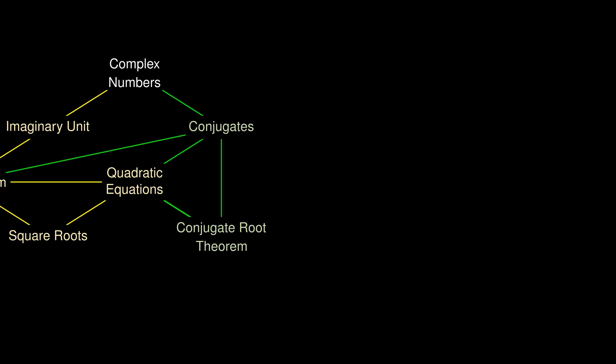For example, suppose we know that the complex number 1 + 2i satisfies a polynomial. Since all of its coefficients are real, we know that the conjugate 1 - 2i also satisfies this equation.